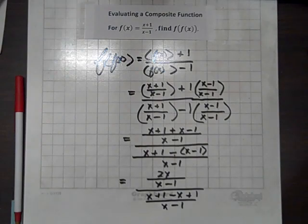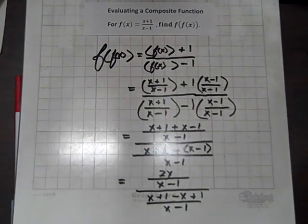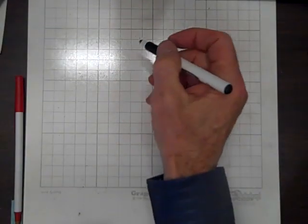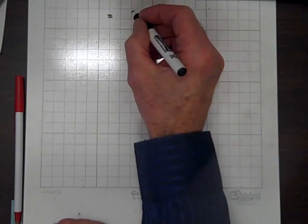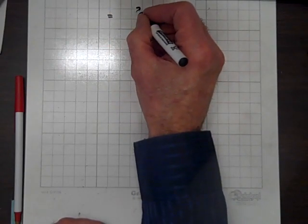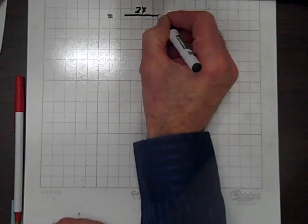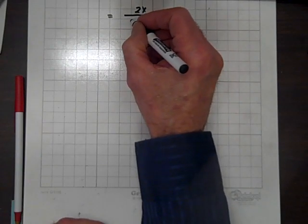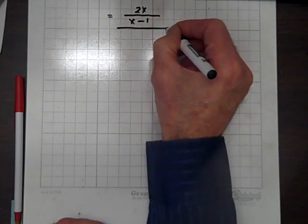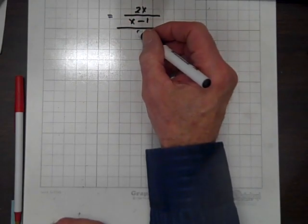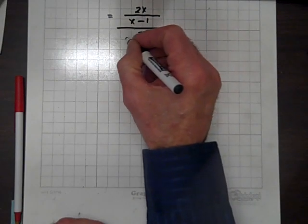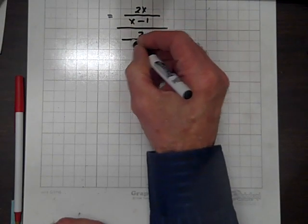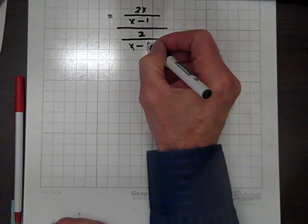I need more space, so we'll get another board. We have 2x over x minus 1 divided by, and adding up, the x's add out, so 1 plus 1 is 2, and we have the denominator x minus 1.